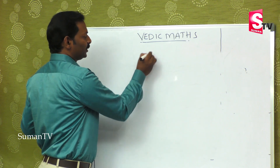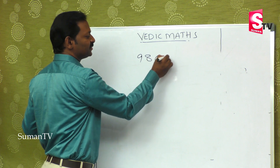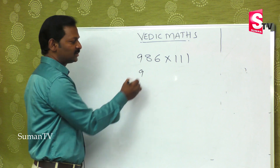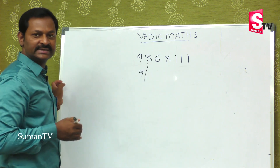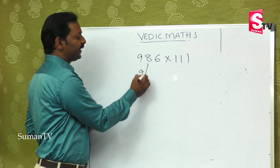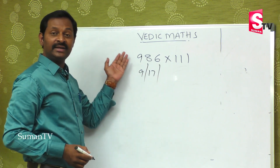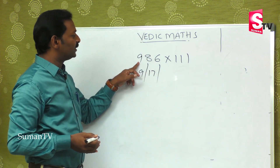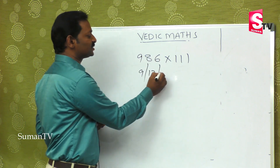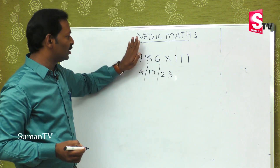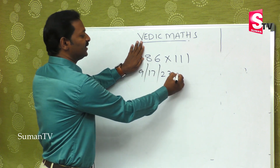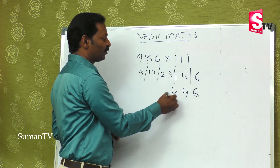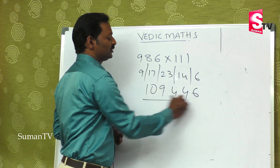Let's take one more example: 986 multiplied by 111. First digit is 9. Then 9 plus 8 equals 17 — we apply the balancing rule. Then 17 plus 6 equals 23. When we complete the 3-digit window, we close it. Last two digits: 8 plus 6 is 14, and the last digit is 6. So the final answer is 1, 0, 9, 4, 4, 6. This is the right answer.